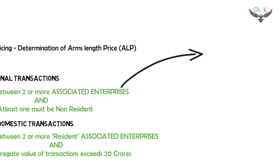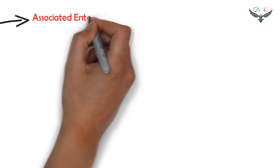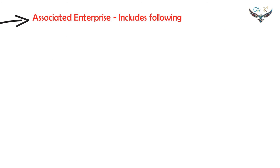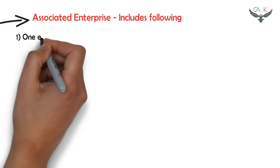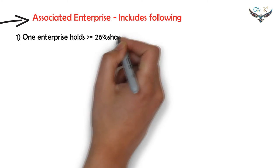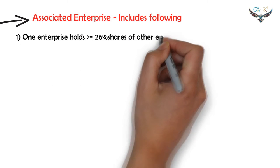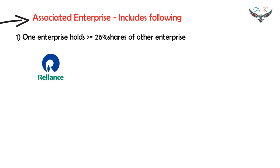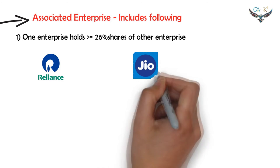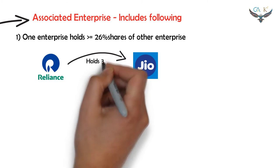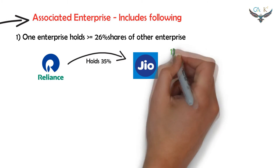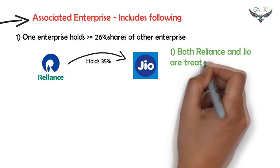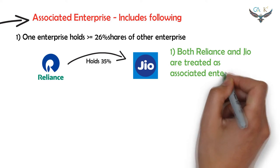Now let us see the definition for associated enterprises. An associated enterprise includes the following: one enterprise holds 26% or more of the shares of the other enterprise. For example, Reliance company holds 35% stake in Jio company — in such case, both Reliance and Jio are treated as associated enterprises under income tax.